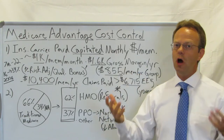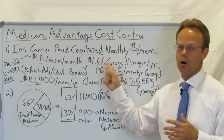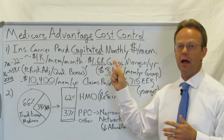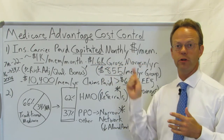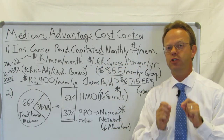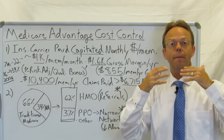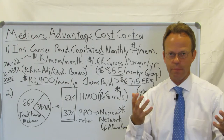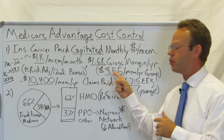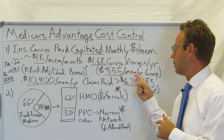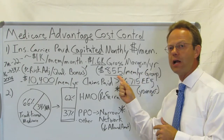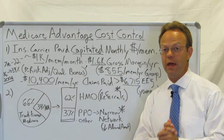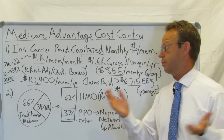The gross margin for a Medicare Advantage plan is about $1,600 per member per year. Interestingly, compared to an insurance company's employer group services, they only make $855 per member per year on the group. So they make almost twice as much on their Medicare Advantage plans than they do on their employer-sponsored plans.